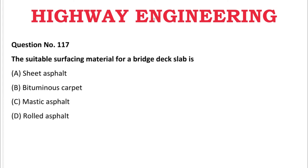Next question: The suitable surfacing material for a bridge deck slab is — A: sheet asphalt, B: bituminous carpet, C: mastic asphalt, D: rolled asphalt. The correct answer is C, mastic asphalt.